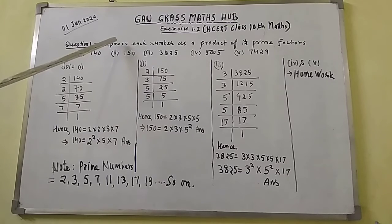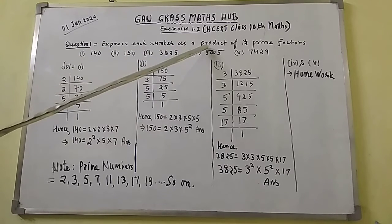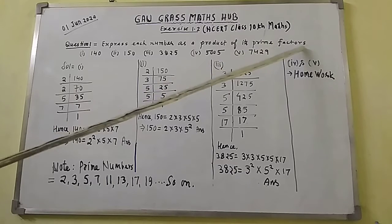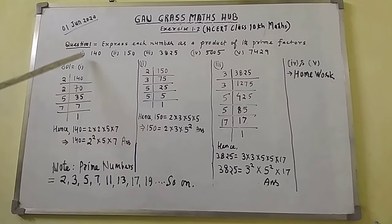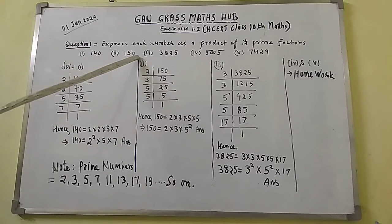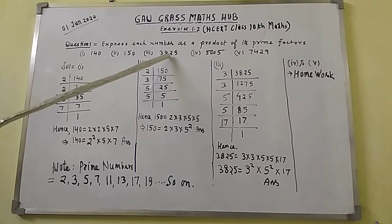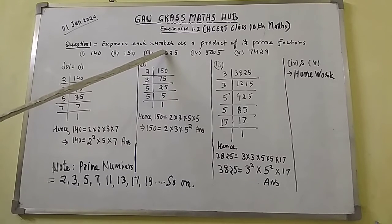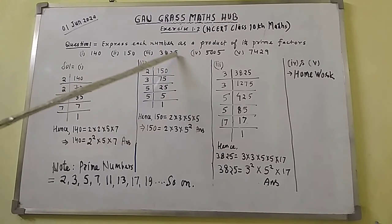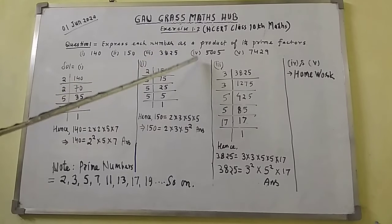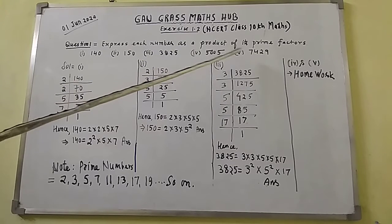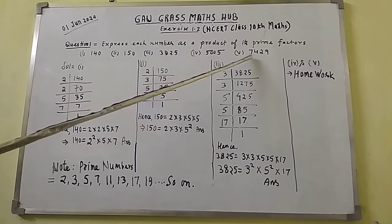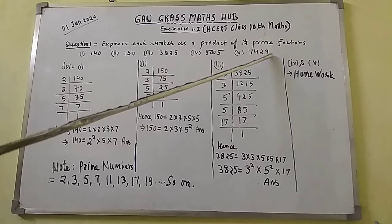Question 1 is: express each number as a product of its prime factors. Roman (i) 140, Roman (ii) 150, Roman (iii) 3825, (iv) 5005, (v) 7429.